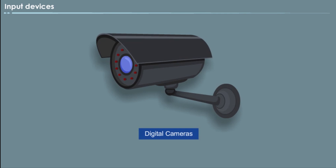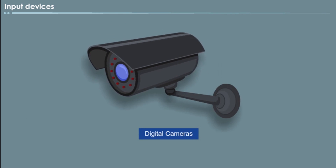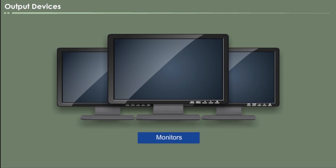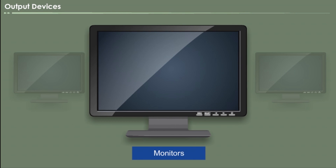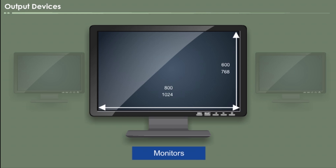Digital cameras, that is input device. They allow you to take digital photographs which are stored on a memory chip or disk and can be transferred into your computer. Monitors. A computer monitor is an output device that is used as an electronic visual display for computers. Monitor screen size is measured diagonally across the screen in inches. The resolution of the monitor is the maximum number of pixels that it can display horizontally and vertically, such as 800x600, 1024x768, or 1600x1200.